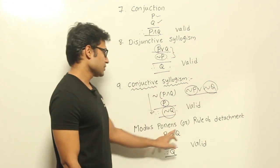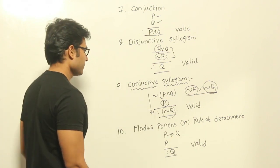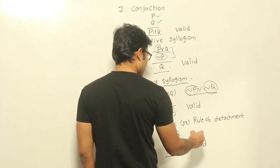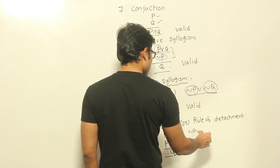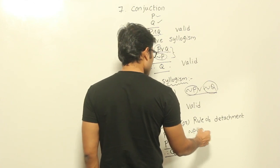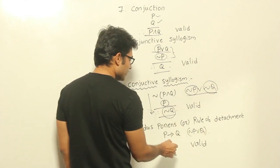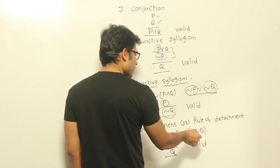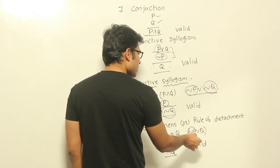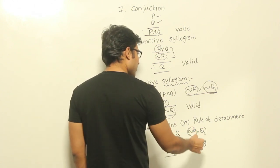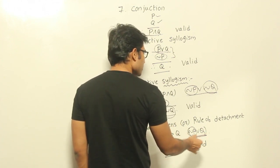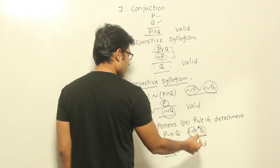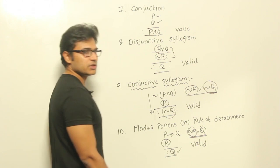Modus ponens, or rule of detachment: P→Q can be written as ¬P∨Q. It is already given that P is true, so ¬P is false. But if the entire expression is going to be true, definitely Q has to be true. That is why the conclusion Q is valid.